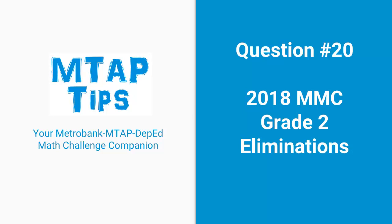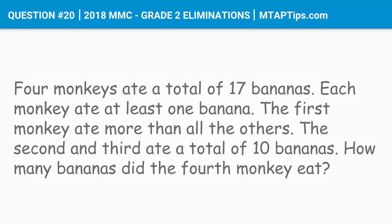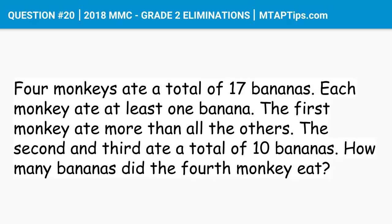Question number 20 for 2018 MMC Grade 2 eliminations. Four monkeys ate a total of 17 bananas. Each monkey ate at least one banana. The first monkey ate more than all the others. The second and third ate a total of 10 bananas. How many bananas did the fourth monkey eat?